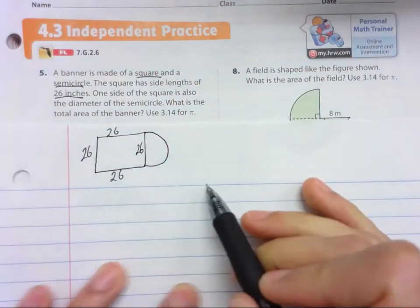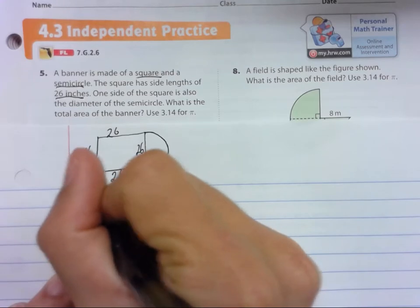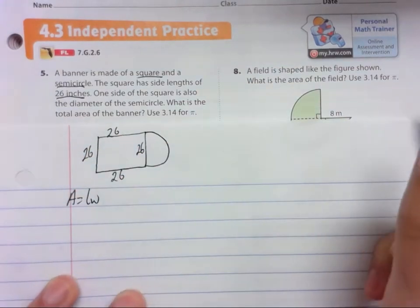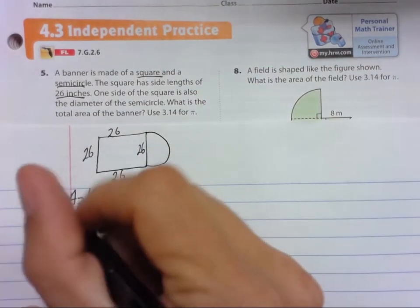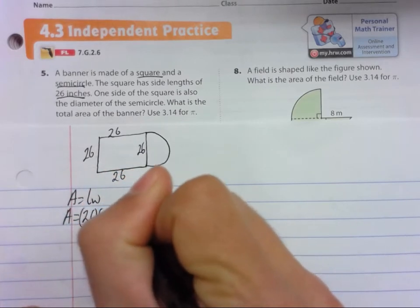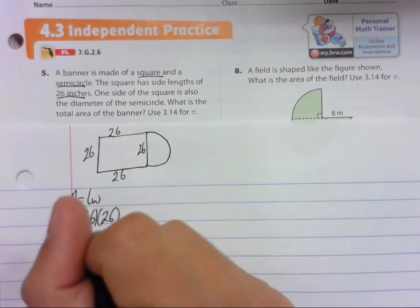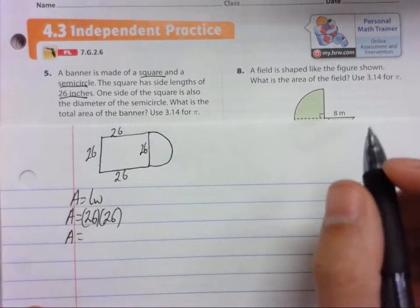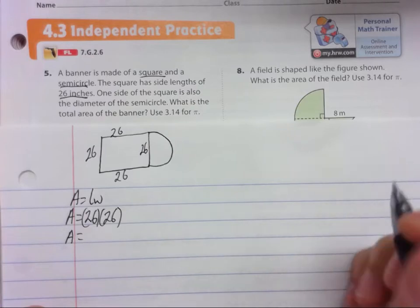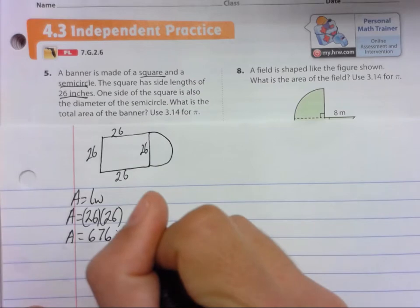So we have two shapes here. Let's do the easier one, the square. Area equals length times width, formula. Now we're going to substitute. Area equals 26 times 26, and 26 times 26. Area is 676 square inches.